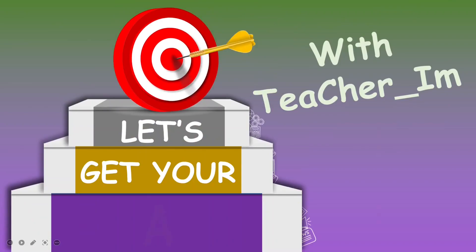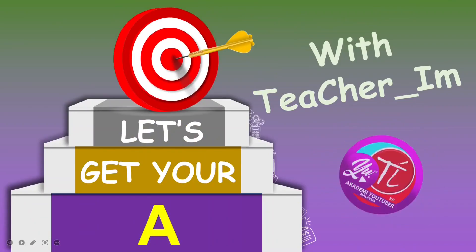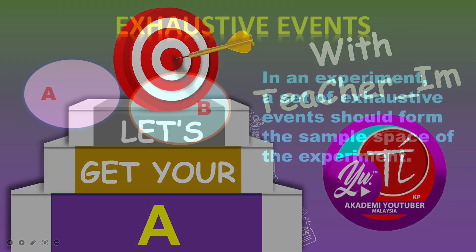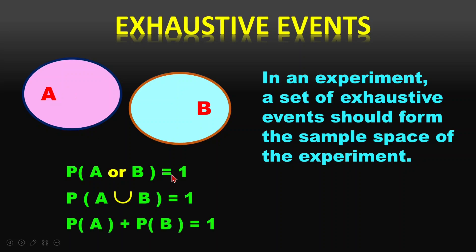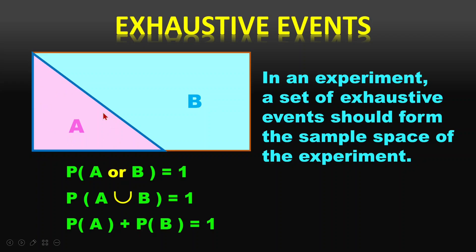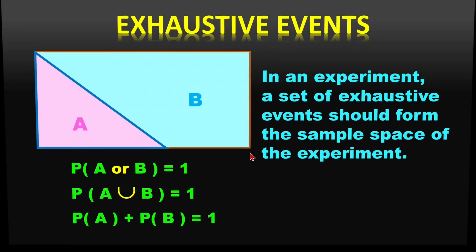Let's start the lesson by truly understanding what exhaustive events are. If I have two sets of events and I say that they are exhaustive, it means the total probability of event A plus event B creates the entire sample space. So P(A∪B) equals the whole sample space, meaning P(A∪B) equals one — probability of one means it covers the full sample space.